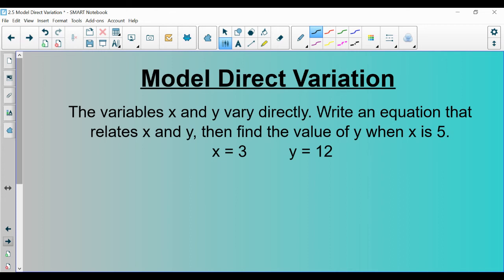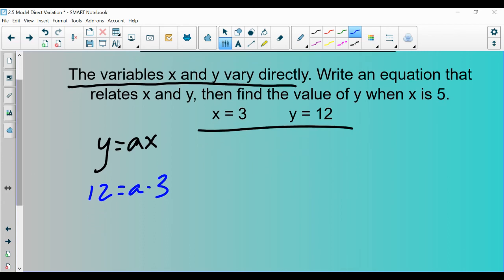I also ask a very similar question to the previous question, but I word it slightly different. Firstly, I say, the variables x and y vary directly. We automatically know that means it's y equals ax. Write an equation that relates x and y given this is x and this is y. So we can simply plug in 3 for x and 12 for y, just like we did in the previous example. And we can write a direct variation equation. Divide by 3, divide by 3, 4 is equal to a. So our direct variation equation is y equals 4x. That's part A of this question, write an equation that relates to x and y. Part B, then find the value of y when x is 5. Plug 5 in for x and figure out what y is. In this case, 20.